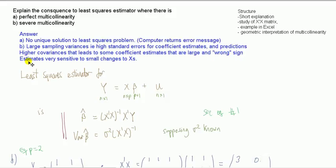Finally, the estimates are going to be very sensitive to small changes in your dataset, to your x's. All three of these things concern what happens when you are running a regression on a sample where you have high multicollinearity. But least squares, supposing that the other assumptions of regression are still satisfied, is still the best linear unbiased estimator.